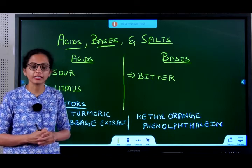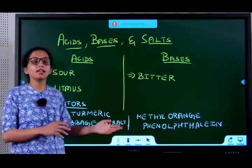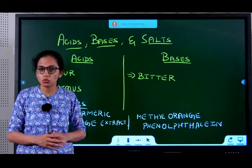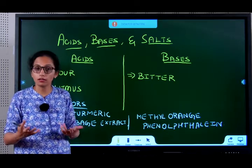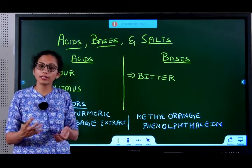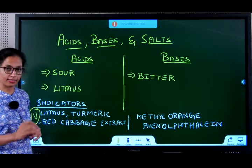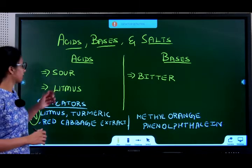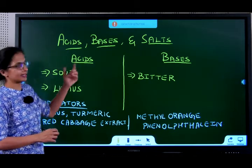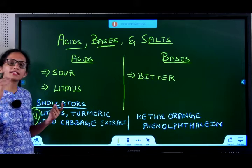The two synthetic indicators we will be studying are methyl orange and phenolphthalein. We will understand what color changes they produce in the next section.